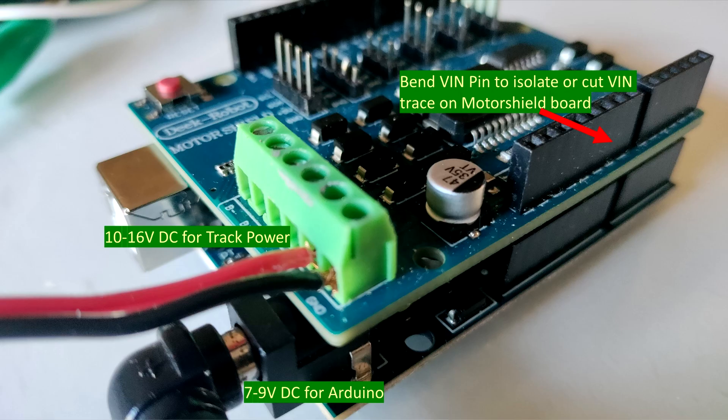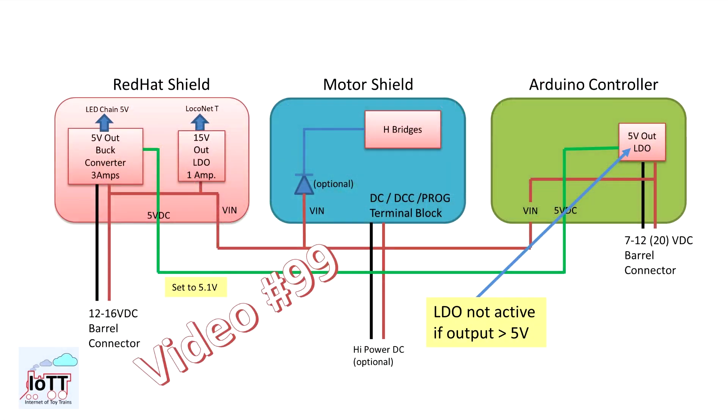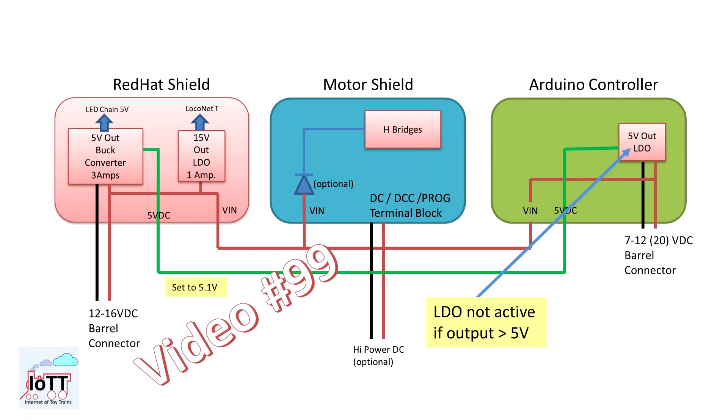The common way to avoid that is using separate power supplies for the Arduino and the motor shield. The more elegant way is to internally generate the 5 volt from the higher VIN voltage using a step-down converter like the one integrated in the Red Hat shield and explained in video number 99.